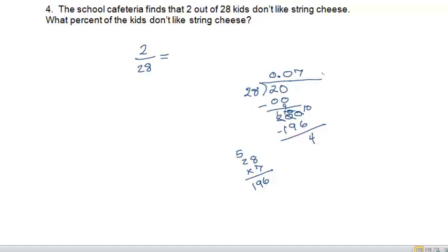So I can keep going to see if this number would be 5 or more. The reason why I need to go one more place is because I want to know if my final answer is going to be 7% or if it's going to be 8%.